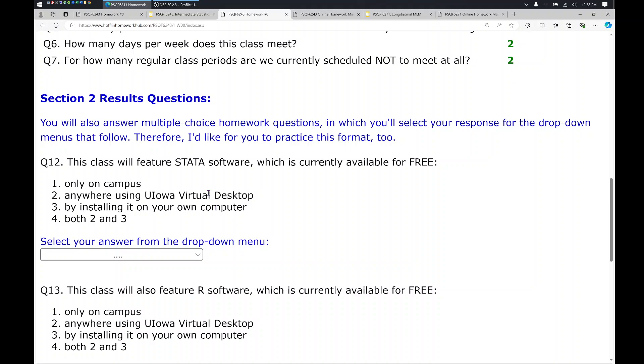Next, the last set of questions here are about software. So this class will feature Stata software, which is available for free anywhere using the virtual desktop. You cannot install it for free on your computer. You must buy a license or have one purchased for you. So the correct answer for Stata is anywhere using virtual desktop.